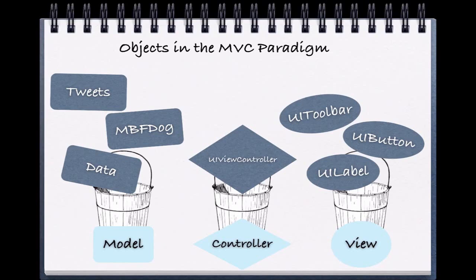The view is what the user sees. Many pre-made views that have been written by Apple start with UI, which stands for user interface. We use views to display what is in our model. Views give us flexibility to display information the way we'd like. For example, with the Twitter data, we can display this information in a multitude of different ways, and this is reflected in the tons of different Twitter shells we have available to us online.